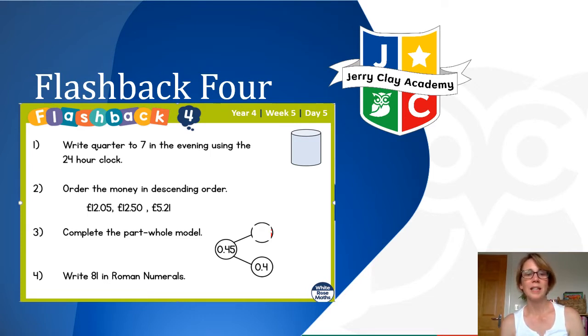So write quarter to seven in the evening using the 24-hour clock. Number two: order the money in descending order. Can you remember which way descending is? That's right, it's going down from the biggest to the smallest. Complete the part-whole model—some practice on our decimals work. Then can you split the 0.45 and one part is 0.4, what is the other missing part? And then Roman numerals: write 81 in Roman numerals.